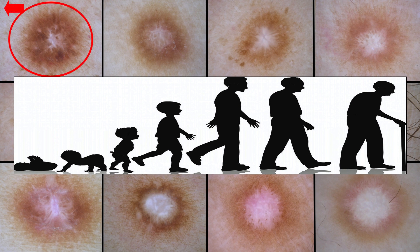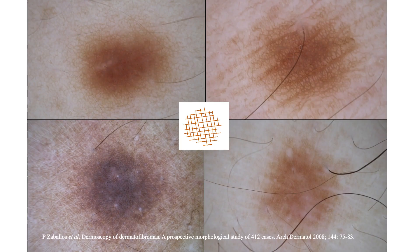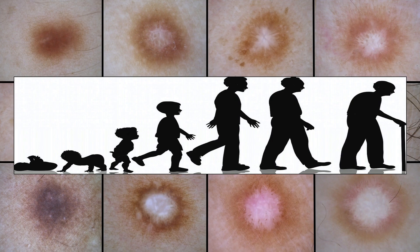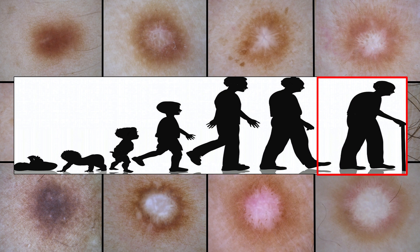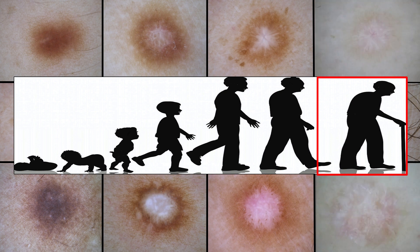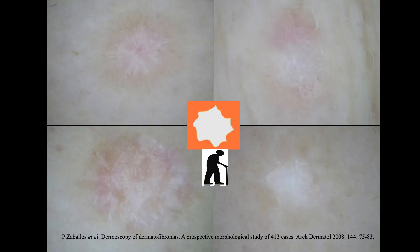Is there a previous stage? Yes. In the study where the authors collected the most dermatofibromas, the second highest pattern associated with these lesions was the delicate pigment network located throughout the lesion, as we can see in these four examples. At the other end of the range, we can also see dermatofibromas which present an extensive scar-like patch forming a total scar-like patch, as we can see in these four examples.